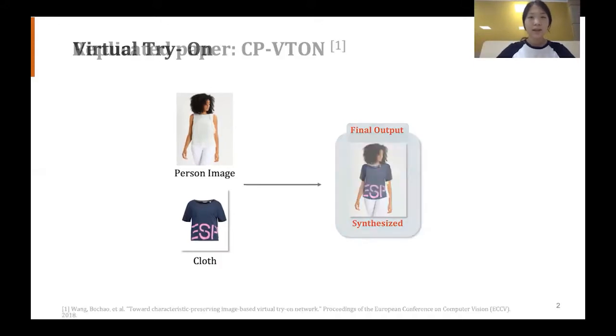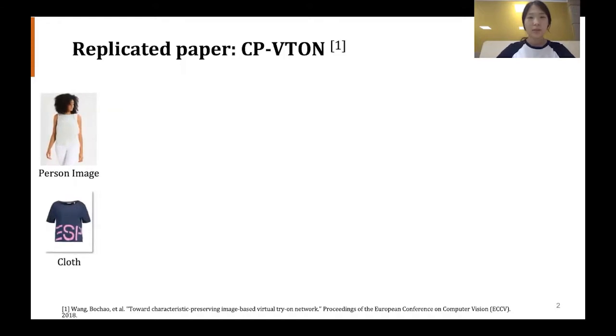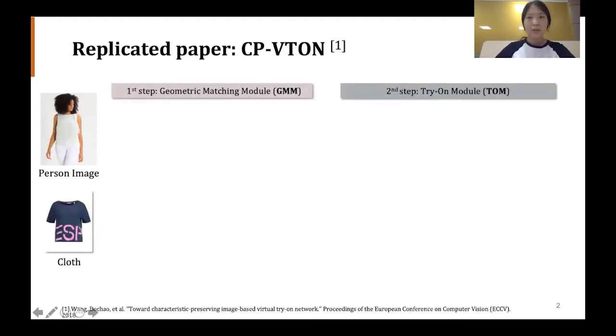Now let's look at one approach to this problem, our replication paper and our baseline. CPVTON by Wang consists of two steps: geometric matching model and try-on model.